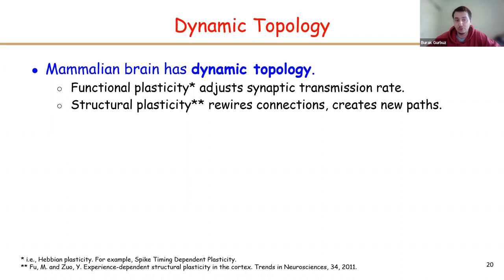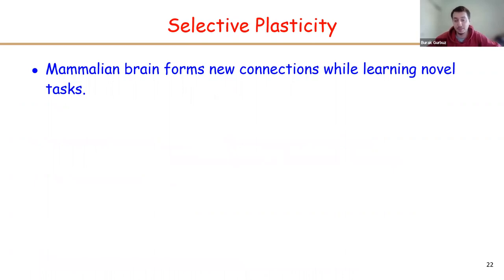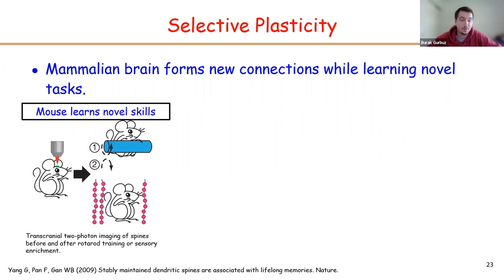The second mechanism is that the mammalian brain has dynamic topology. The brain learns through two types of plasticity. The first is functional plasticity, which adjusts the synaptic transmission rates between neurons. The second is structural plasticity, which rewires the neural circuitry while learning tasks. In artificial neural networks, we observe a static topology. They have weight updates, which might be considered analogous to functional plasticity, but there is no room for connection rewiring because layers are densely connected and all possible connections are already present.